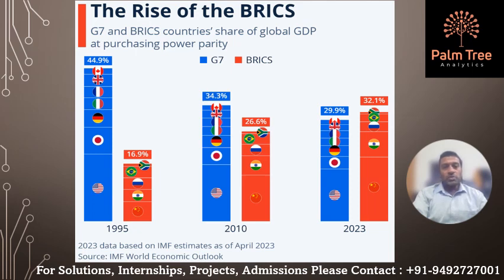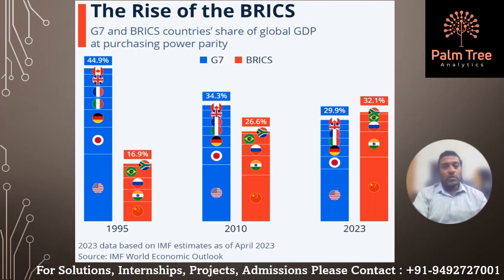China's manufacturing prowess, massive consumer market and innovation-driven growth have propelled it into the forefront of the global economy. While India is still a couple of steps behind, its massive population and bustling tech industry position it to become the block's second economic superpower. Meanwhile, Russia, Brazil and South Africa have fallen short of expectations, with their share of global GDP at purchasing power parity actually declining over the past two decades. Despite this, the five BRICS nations surpassed the G7 in terms of combined GDP in 2020, when measured at purchasing power parity. According to the IMF, the block will collectively account for 32.1% of global GDP, up from just 16.9% in 1995 and more than the G7 share of 29.9%.